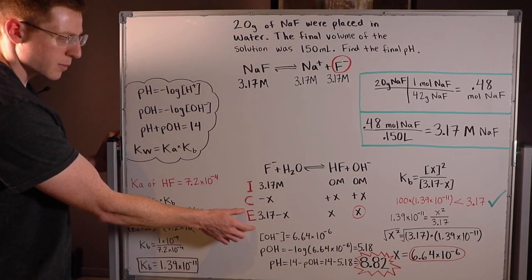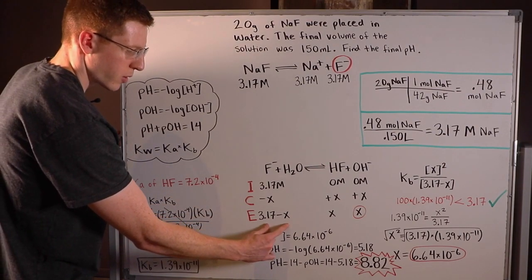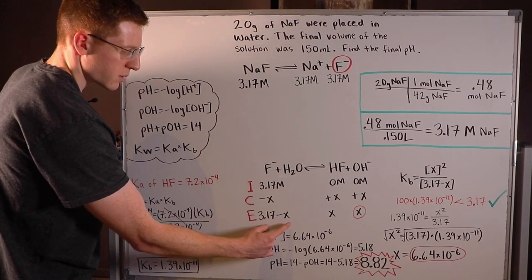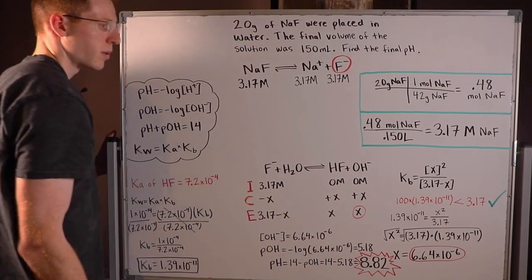Finally, I obtained my equilibrium row by adding together the I and the C rows. You can see here 3.17 plus -x is 3.17 - x. 0 + x is x and 0 + x is x.